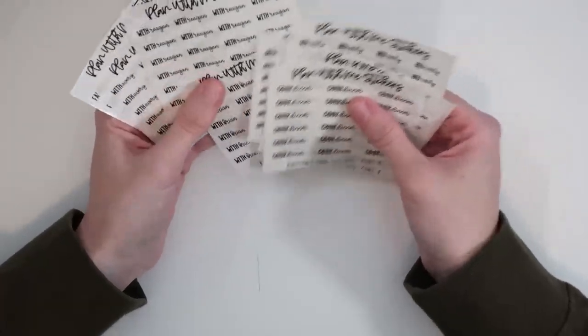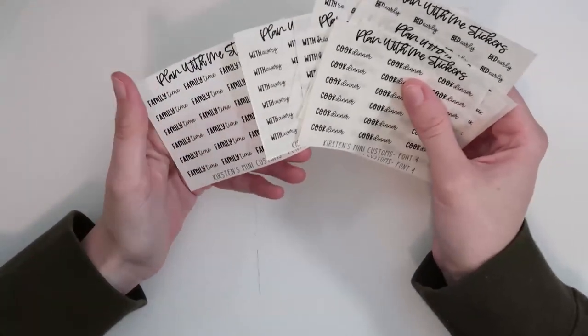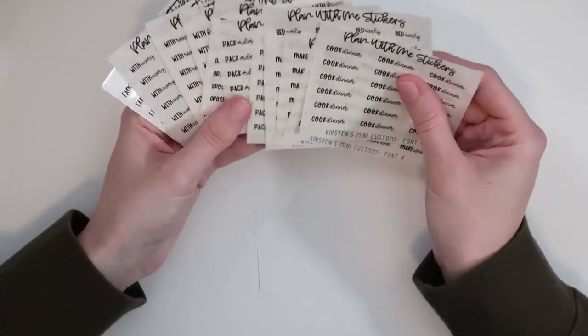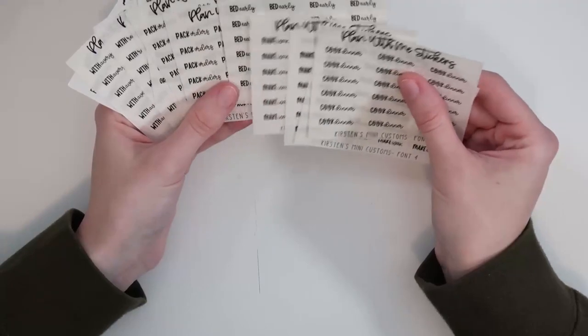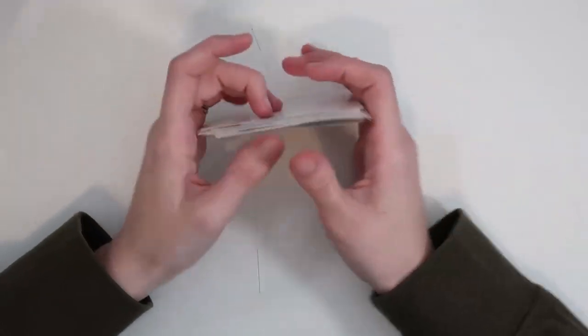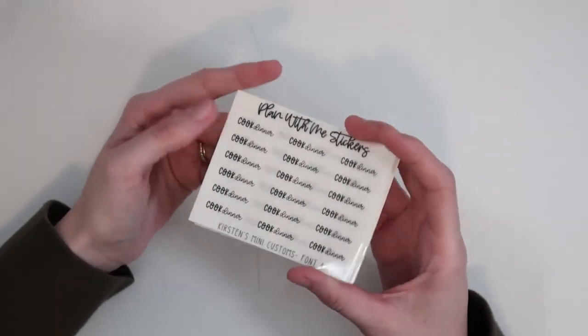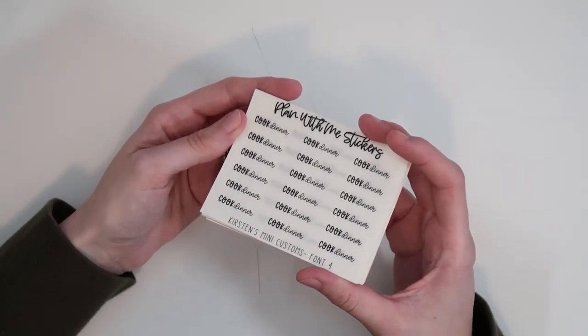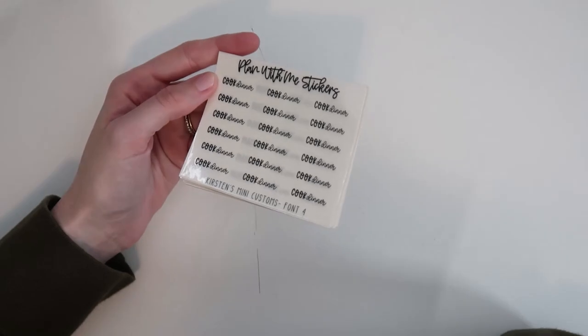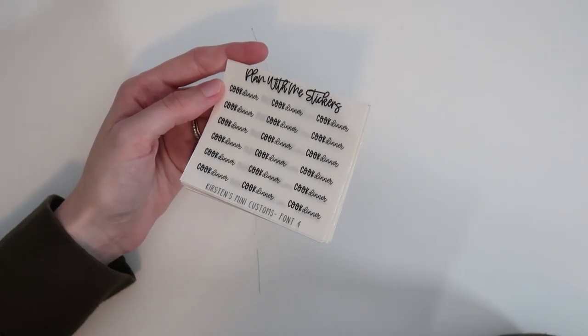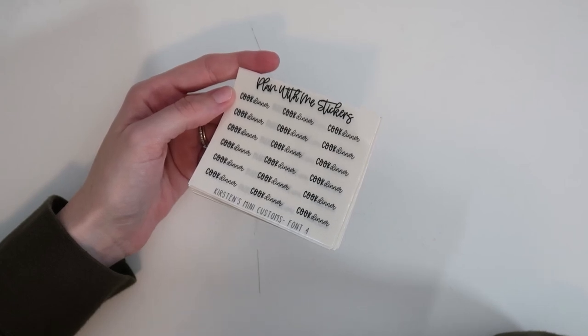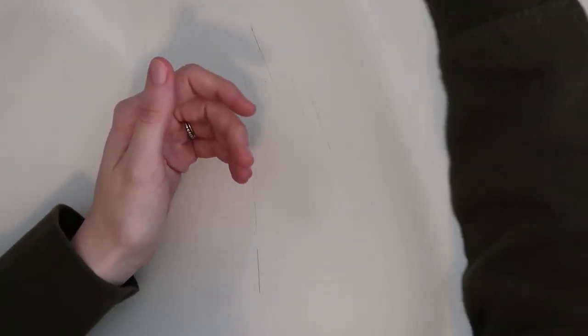So she had these cute little mini scripts. I got font four and I got a bunch of them. So the first one I got here is grocery pickup. And then I got pack orders, bed early, make wax, cook dinner. And then these are the customs she made. I just got them in black. She made with Brian, with Reagan, with Avery and Family Time, which is like the sweetest thing on the whole freaking planet. I'm super excited to use these.